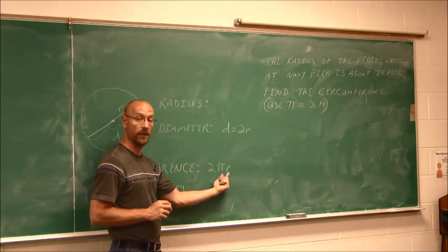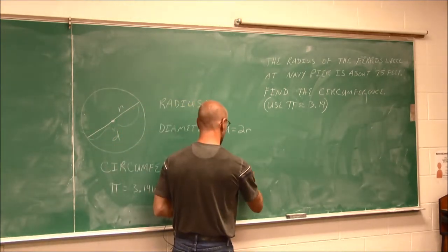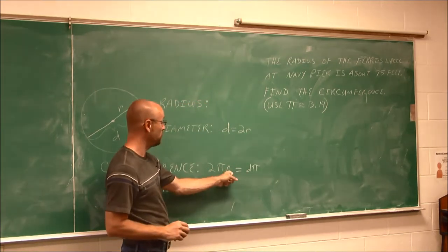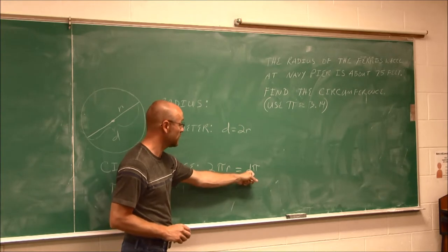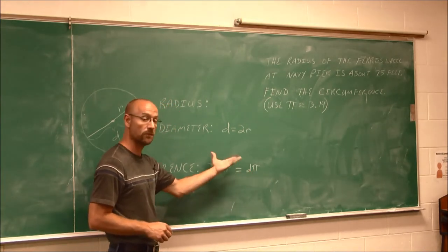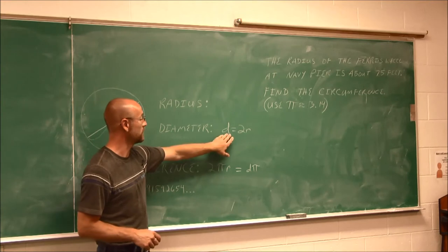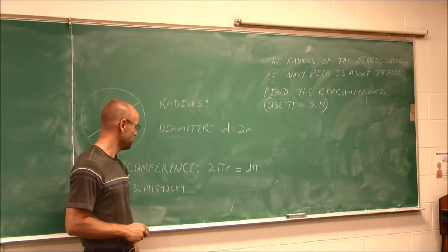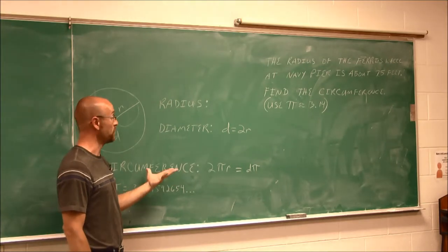But you can also memorize it in terms of diameter. Because 2 times the radius is the diameter, so these are equivalent. As long as you know this relationship - that the diameter is twice the radius - you can use either one of these formulas, depending on what information you may be given.